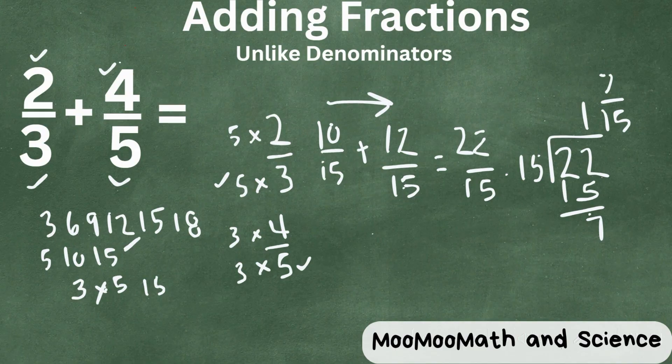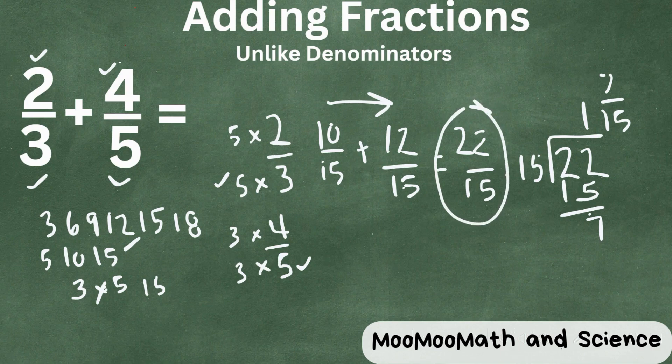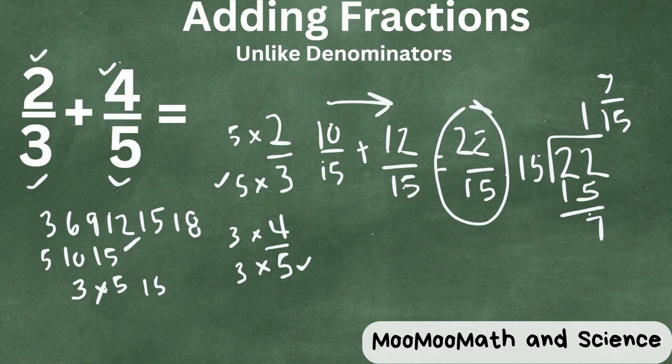So that gives us a mixed number of one and seven-fifteenths. So there we go, two-thirds plus four-fifths is twenty-two over fifteen, or one and seven-fifteenths. I hope that was helpful.